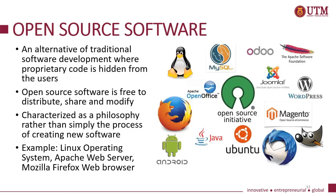What is open source software? It is an alternative to traditional software development where proprietary code is hidden from the users. Open source software is free to distribute, share, and modify. It can be characterized as a philosophy rather than simply the process of creating new software. Famous examples of open source software include the Linux operating system, Apache web server, and Mozilla Firefox web browser.